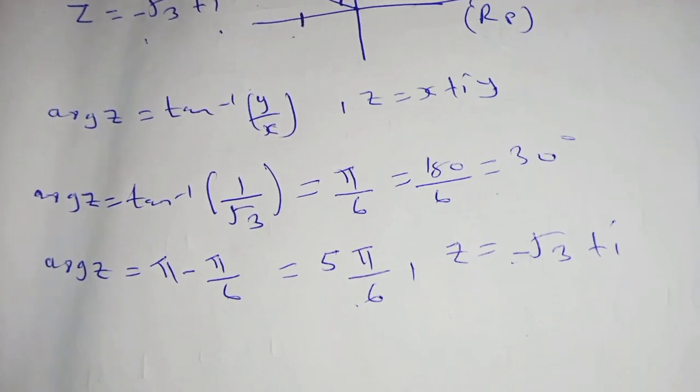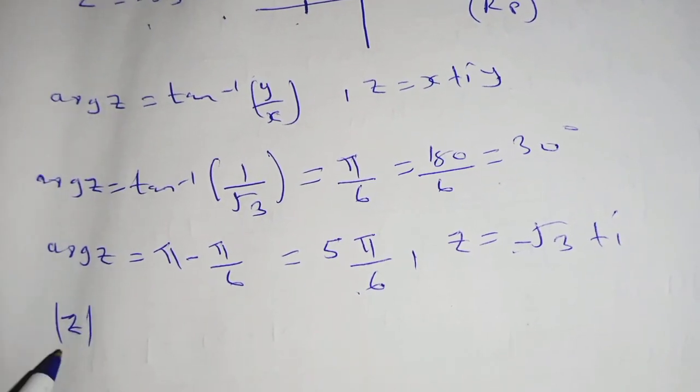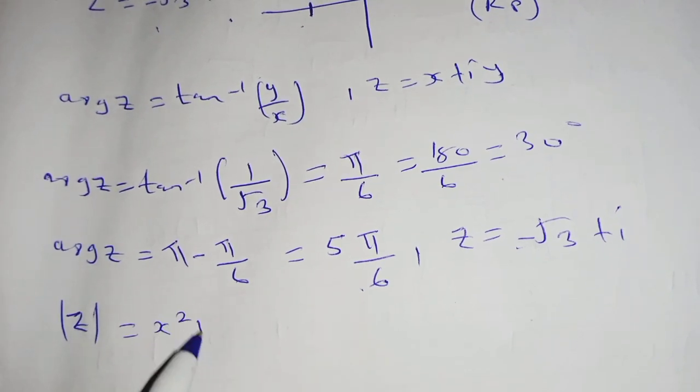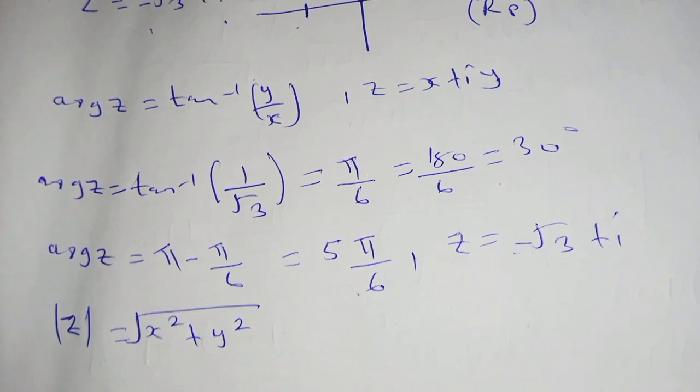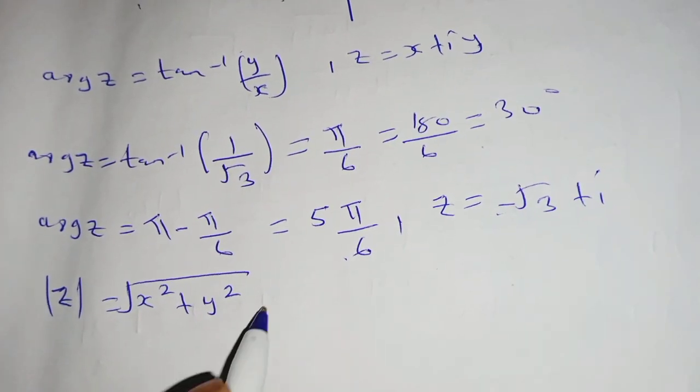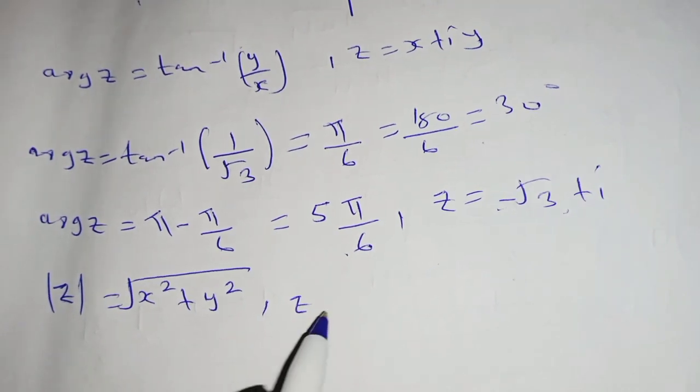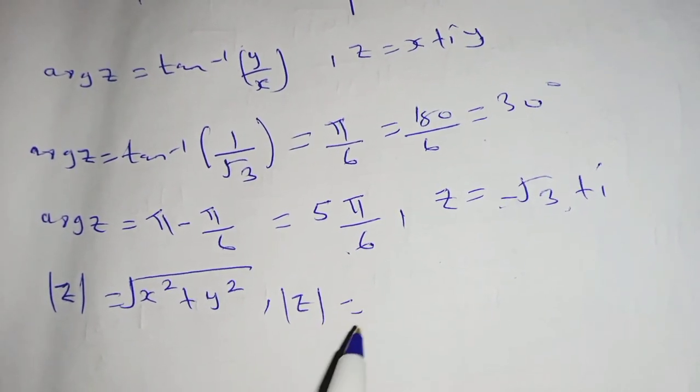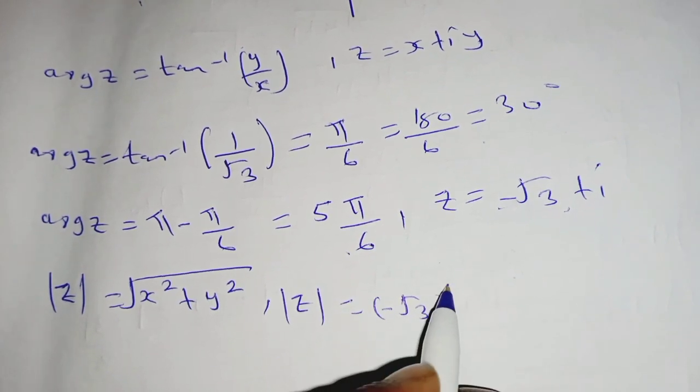The next thing we want to get is modulus z. Modulus will be given by square root of x squared plus y squared. In our case, remember we are given z here, so our modulus z will be given by...